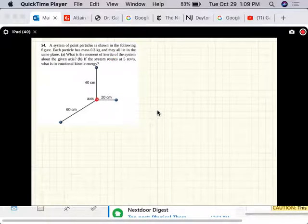What is the moment of inertia of the system about the given axis? So there is the axis and it's implied that the axis is perpendicular to the sheet of the paper. So these guys are rotating like that or like that. So this is the axis of rotation.